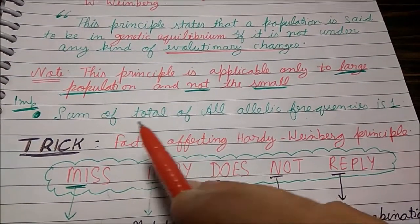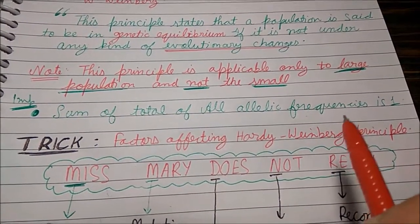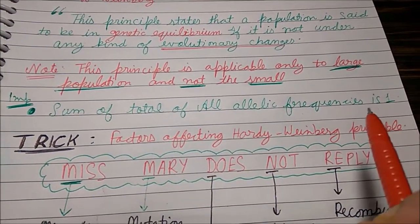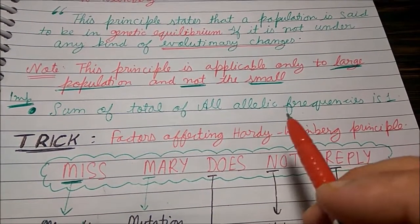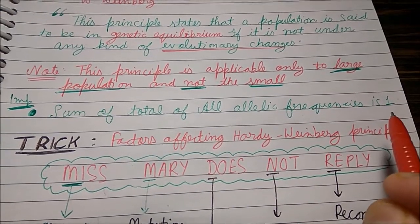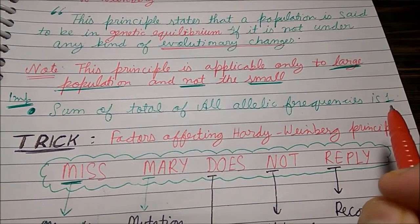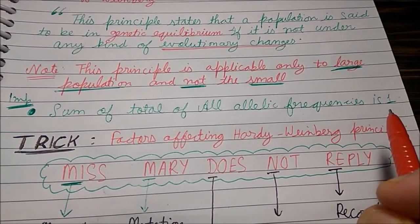The sum total of allelic frequency is always 1. Please note, it's always 1 — neither more than 1, nor less than 1.